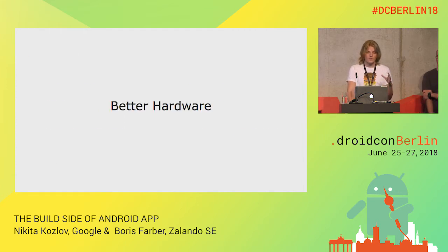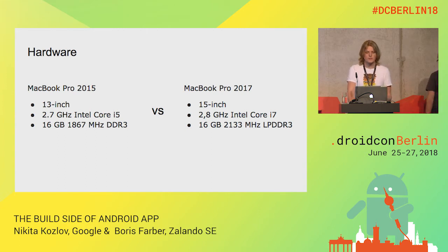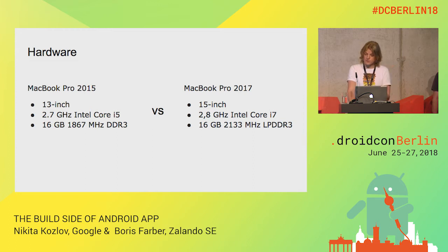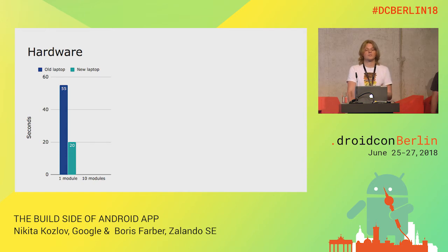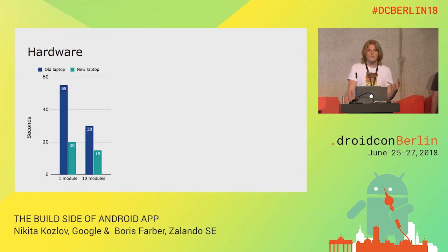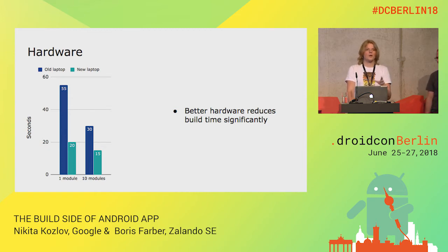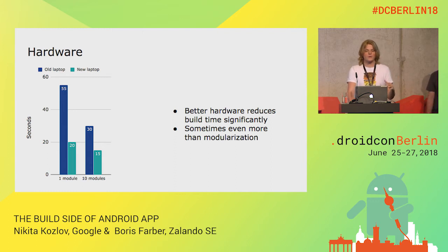Next is hardware. We generated a project, half Kotlin and half Java, with 200,000 methods, and profiled it on a three-year-old MacBook Pro and on the latest one. The new MacBook Pro has a faster CPU, more cores, and faster RAM. On a one-module configuration, the build time was three times faster — just by replacing the laptops. On a modularized project with 10 modules, the gain was less, but it still got twice as fast. Interestingly, on this particular project, replacing hardware did a better job of improving build speed than modularization. The new laptop took 20 seconds; the modularized project on the old one took 30.